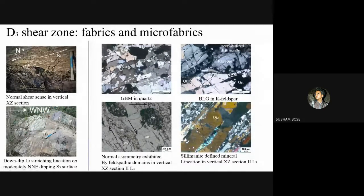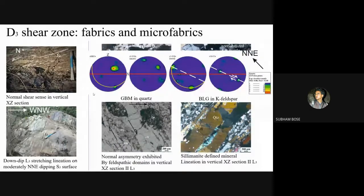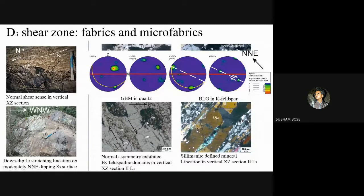Within the D3 shear zone, where a prominent normal asymmetry is consistently observed in vertical section, simultaneous operation of grain boundary migration in quartz and bulging recrystallization in K-feldspar constrains the temperature of D3 normal shearing to 550–600°C, or middle to lower amphibolite facies conditions. This is conformable with the operation of rhomb A-slip in quartz, and the prominent asymmetry in the CPO pattern of quartz is correlatable with this normal shear sense. In high D3 strain zones, in sections parallel to the down-dip L3 stretching lineation, both quartz and feldspar form ribbons along with a sillimanite-defined mineral lineation.